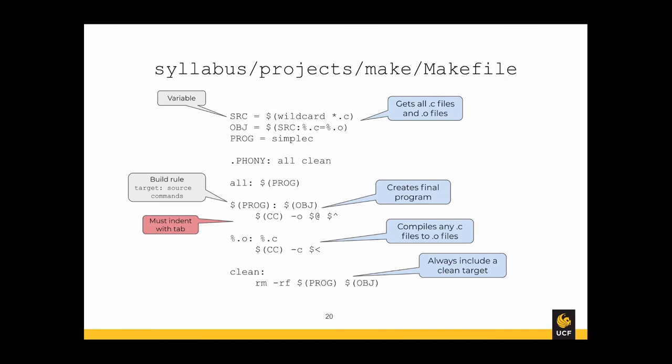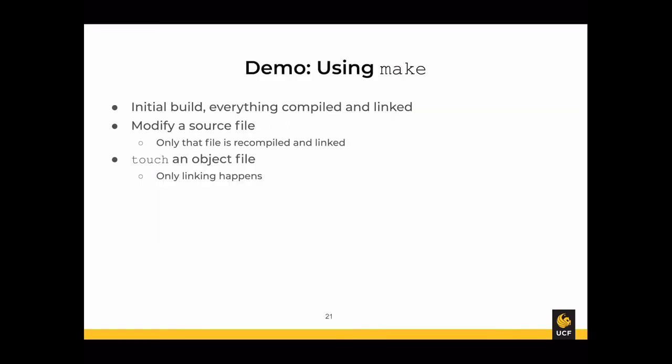Every good build automation should have a way to remove all generated files — binaries, documentation, intermediate files. By convention, that's a clean target. In this case, the clean target just removes the program and the object files that were created.